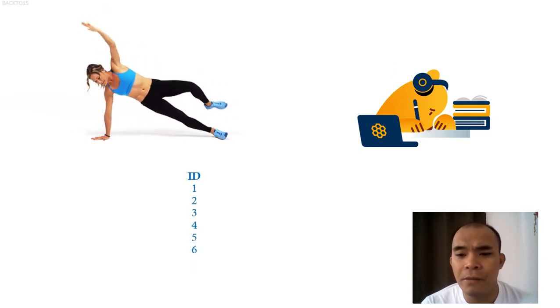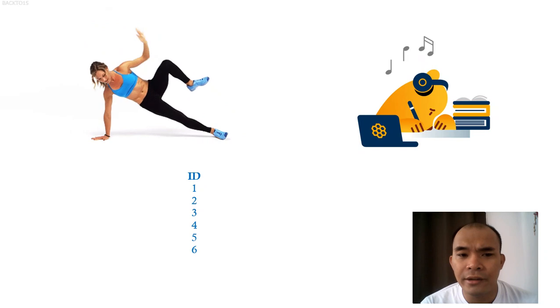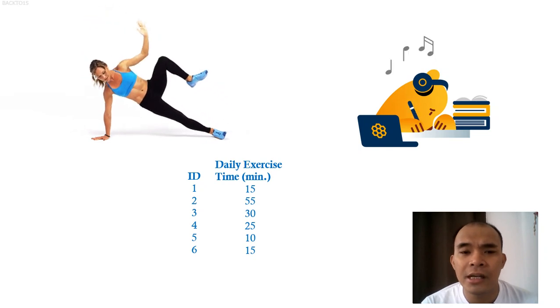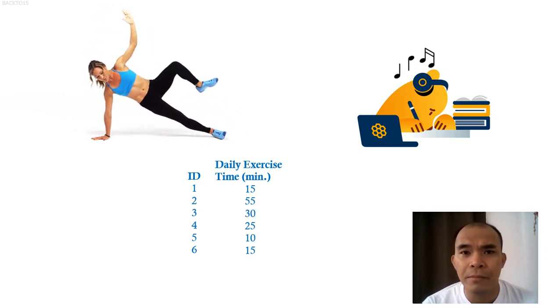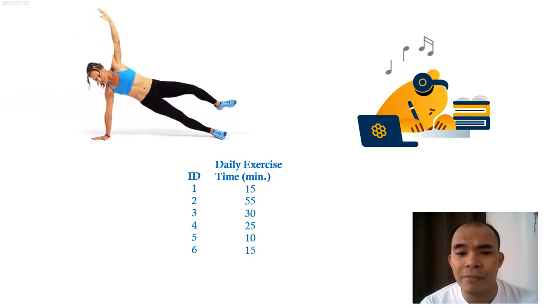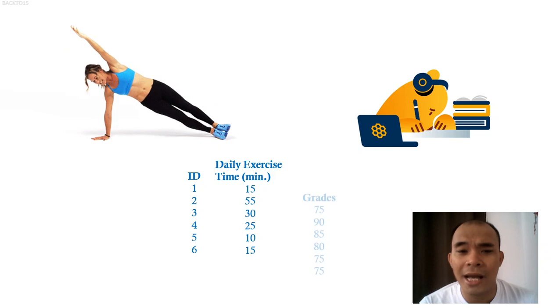For example, if we gathered some respondents with ID 1, 2, 3, 4, 5, 6, and then we ask their corresponding daily exercise time. In this particular case, respondent number one answered 15 minutes, respondent two 55 minutes, so on and so forth.